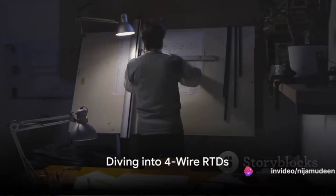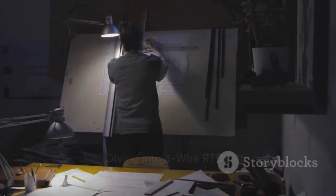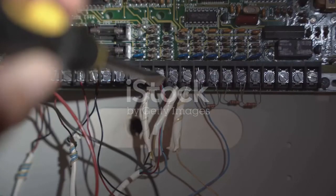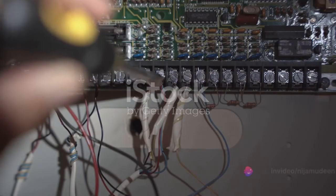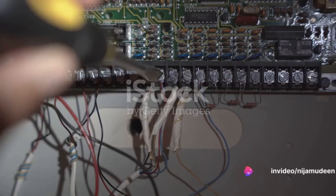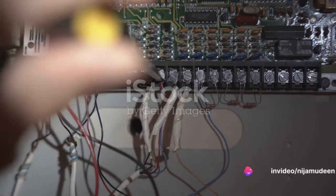Finally, let's talk about the most complex of the lot. Four-wire RTDs. This type of sensor takes precision to another level. How? Well, it's all about eliminating inaccuracies, and in the case of four-wire RTDs, they rule out any potential error caused by the resistance of the lead wires.